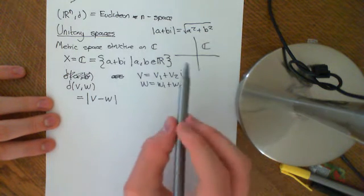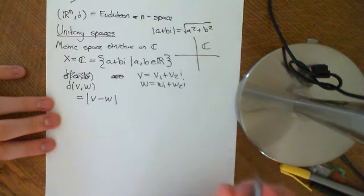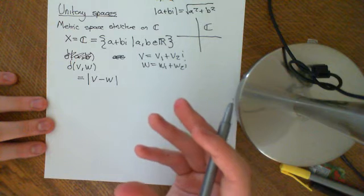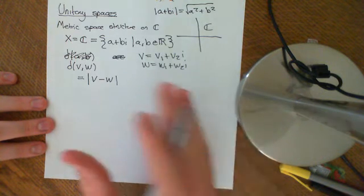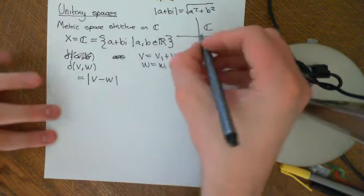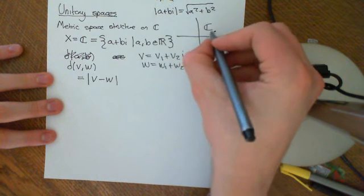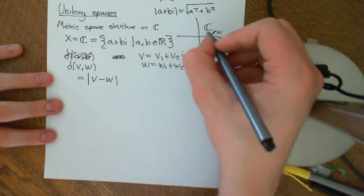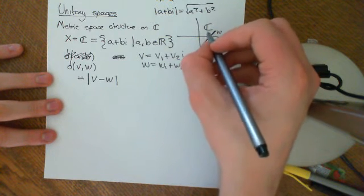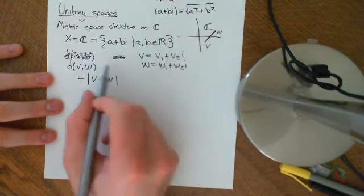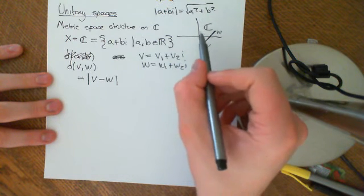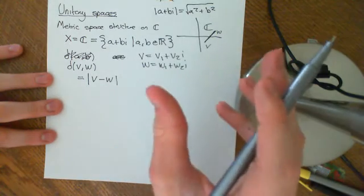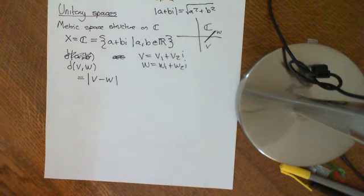That ascribes to every pair a positive real number. This metric is metrically isomorphic to the Euclidean plane with its metrical structure. Because if you have two complex numbers V and W, the modulus of V minus W is the modulus of the complex number connecting the two. The modulus is actually just analogous to the length of the vector representing it. If you ascribe every point of the plane a complex number instead of an ordered pair of real numbers and put this metric on the complex numbers, it gives you the same metrical structure as the Euclidean plane.